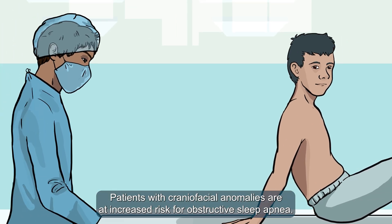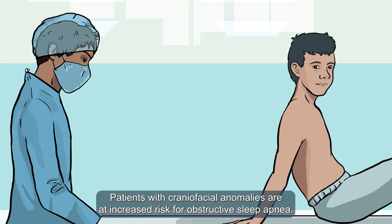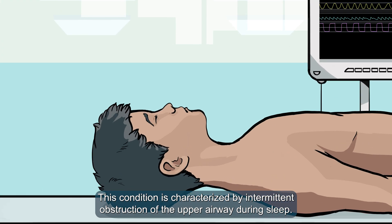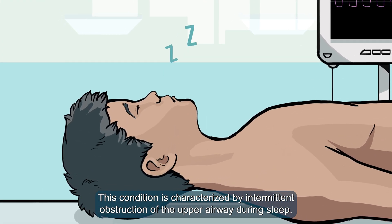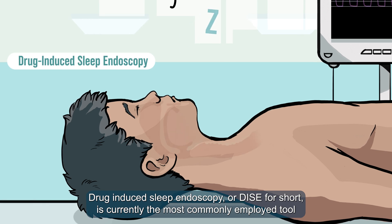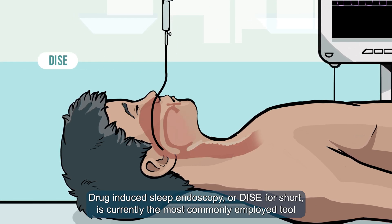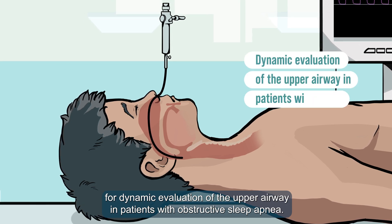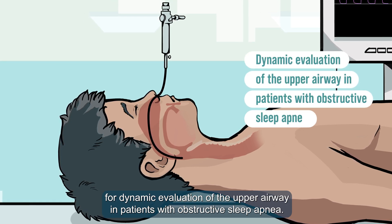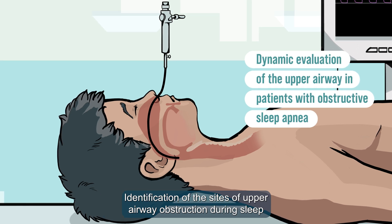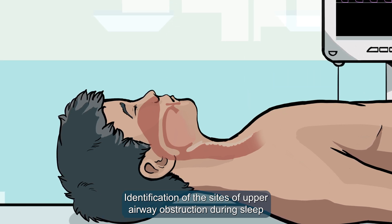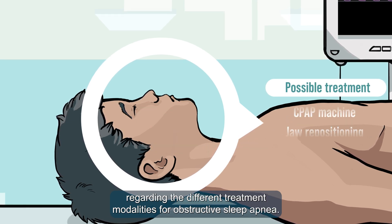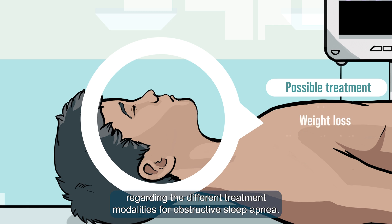Patients with craniofacial anomalies are at increased risk for obstructive sleep apnea. This condition is characterized by intermittent obstruction of the upper airway during sleep. Drug-induced sleep endoscopy, or DISE for short, is currently the most commonly employed tool for dynamic evaluation of the upper airway in patients with obstructive sleep apnea. Identification of the sites of upper airway obstruction during sleep may guide decision-making by clinicians and patients or caregivers regarding the different treatment modalities for obstructive sleep apnea.